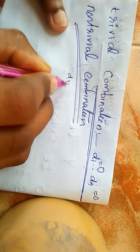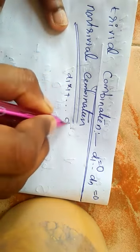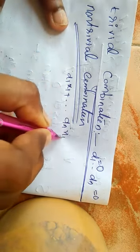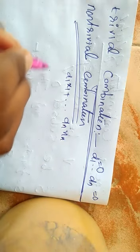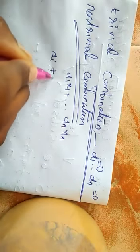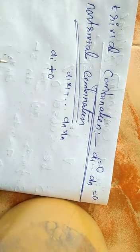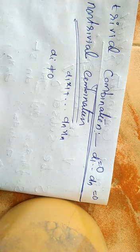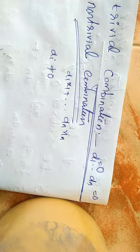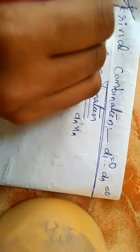That means alpha 1 times x1 plus and so on plus alpha n times xn, where at least one of the alpha i is not equal to 0 — then you say that is a non-trivial combination. So we have trivial combination and non-trivial combination.